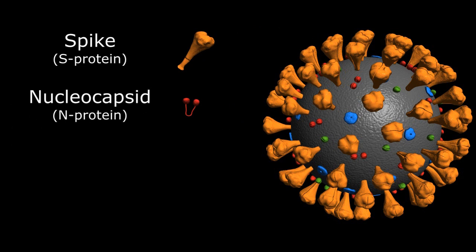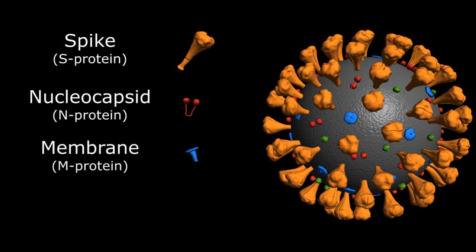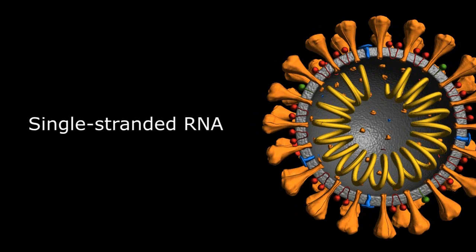nucleocapsid or N protein, membrane or M protein, and envelope or E protein, all designed to house and protect the delicate genetic material in its hollow spherical core.